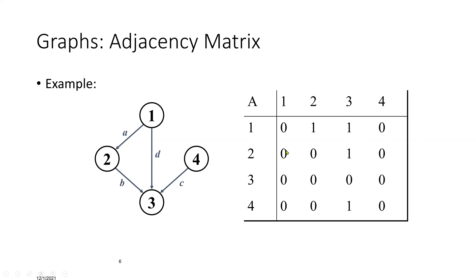Now we move to the second row — we are standing at the second vertex. There is no edge from vertex 2 back to vertex 2 (no loop), so row 2, column 2 is 0. Row 2, column 1: can we move from 2 to 1? No, so it's 0. Row 2, column 3: there is an edge from 2 to 3, so we have 1. Row 2, column 4: there is no edge from 2 to 4, so it's 0. The second row is [0, 0, 1, 0].